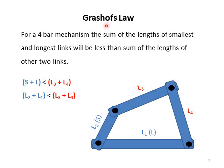It's called Grashof's law. This law is valid for a four-link or four-bar mechanism — link and bar are the same thing. According to Grashof's law, the sum of the lengths of the smallest and the longest links will be less than the sum of the lengths of the remaining two links.